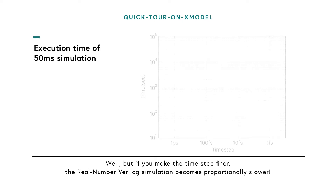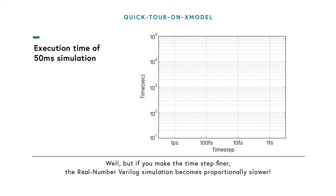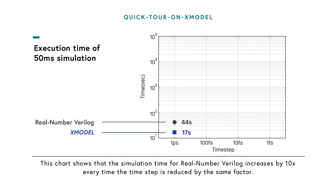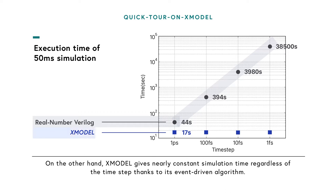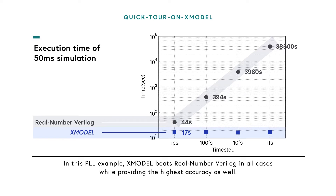If you make the time step finer, the Real Number Verilog simulation becomes proportionally slower. This chart shows that simulation time for Real Number Verilog increases by almost 10x every time you reduce the time step by the same factor. On the other hand, X-Model gives nearly constant simulation time regardless of the time step, thanks to its event-driven algorithm. In this PLL example, X-Model beats Real Number Verilog in all cases while providing the highest accuracy as well.